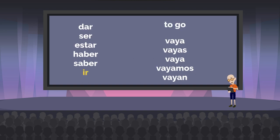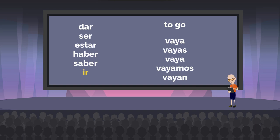And our last verb — and probably one of the most common ones I use in the subjunctive — is ir, which means to go. We have vaya, vayas, vaya, vayamos, vayan. For example: 'Let me know when you go to the beach. I want to accompany you.' Avísame cuando vayas a la playa. Quiero acompañarte.